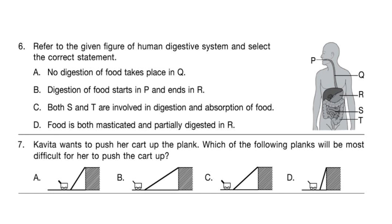Question 6: Refer to the given figure of the human digestive system and select the correct statement. The options are: A — no digestion of food takes place in Q; B — digestion of food starts in P and ends in R; C — both S and T are involved in digestion and absorption of food; D — food is both masticated and partially digested in R. The correct answer is only option A: no digestion of food takes place in Q.